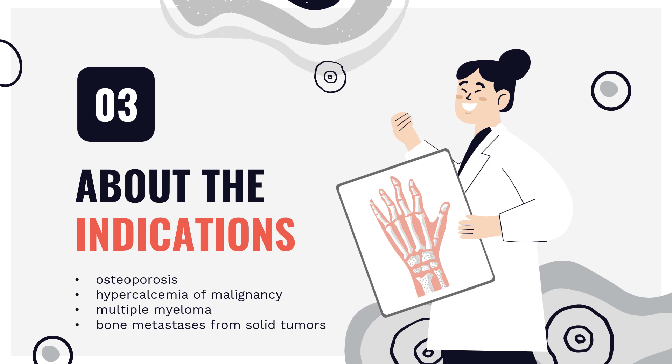What is Zoledronic Acid used for? Zoledronic Acid is indicated to treat hypercalcemia of malignancy, multiple myeloma, bone metastases from solid tumors, osteoporosis in men and postmenopausal women, glucocorticoid-induced osteoporosis, and Paget's disease of bone in men and women. Zoledronic Acid is also indicated for the prevention of osteoporosis in postmenopausal women and glucocorticoid-induced osteoporosis.